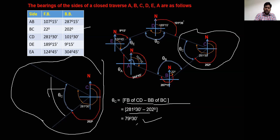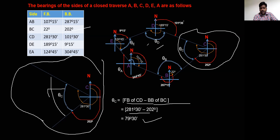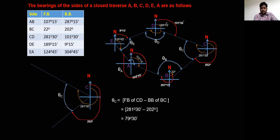In the similar way, we need to calculate at stations D and E. After calculating all interior angles, we need to cross-check whether they are correct or not using a separate verification. We will see the interior angles at stations D and E in the next class. Thank you.